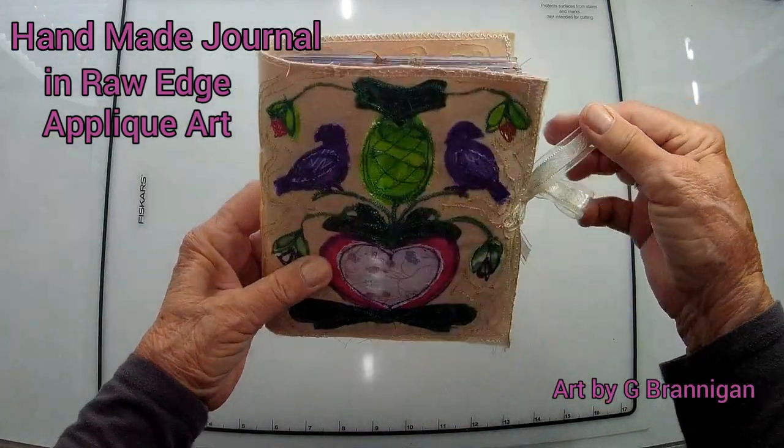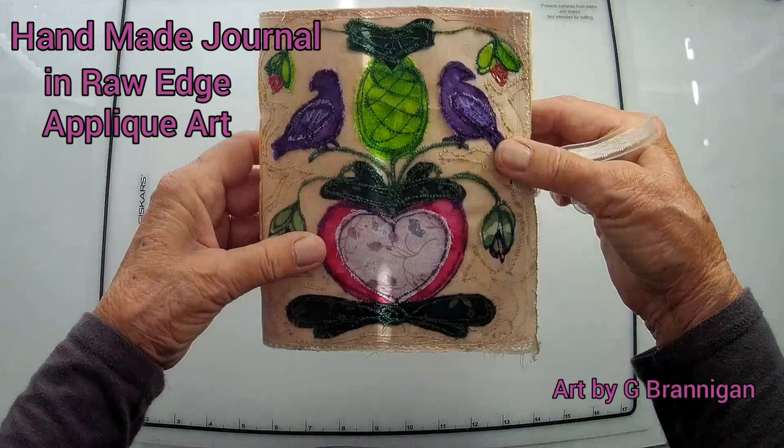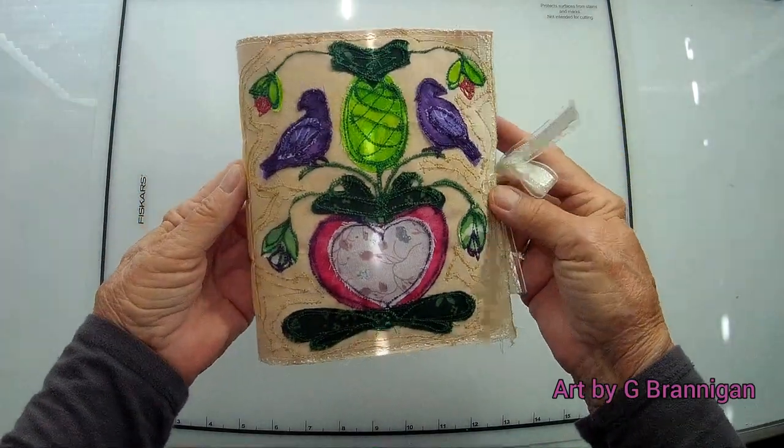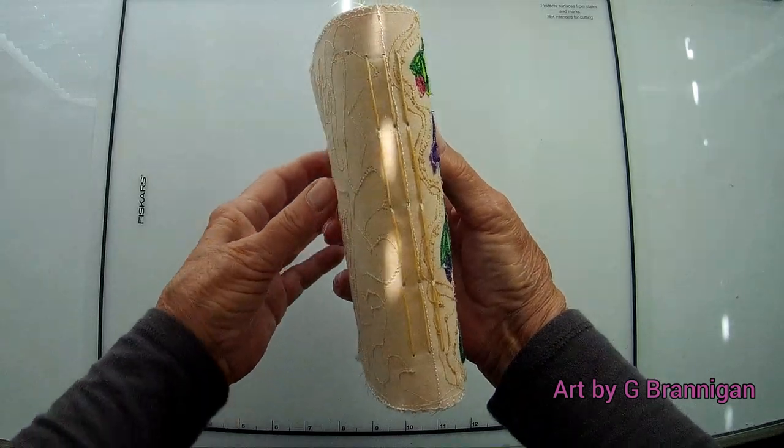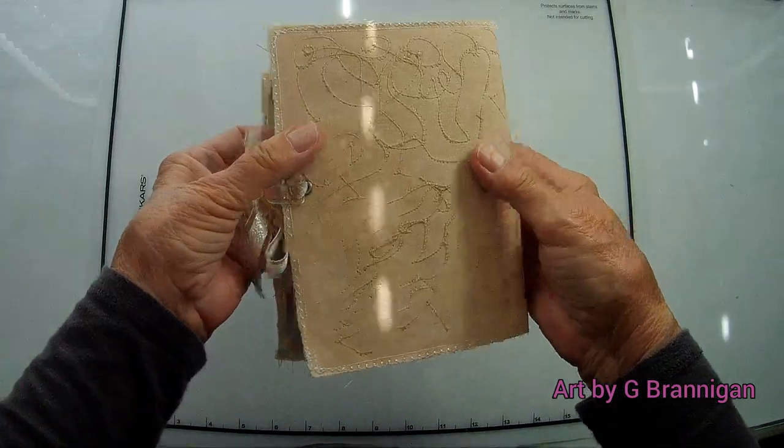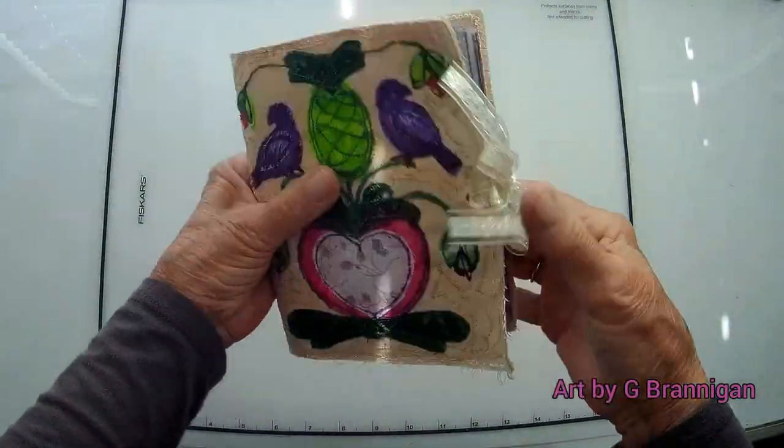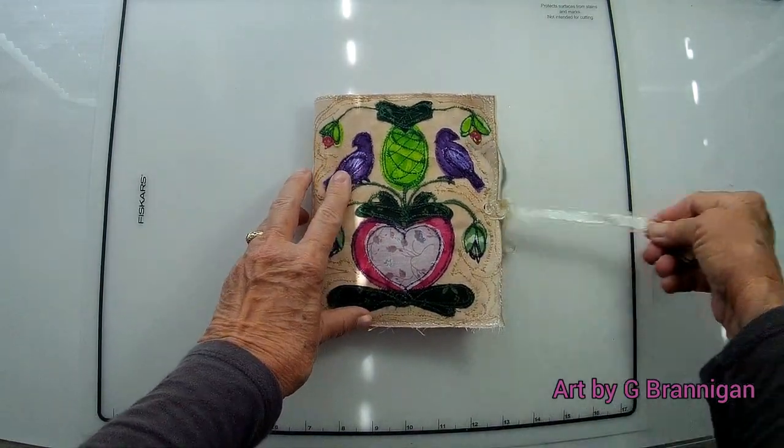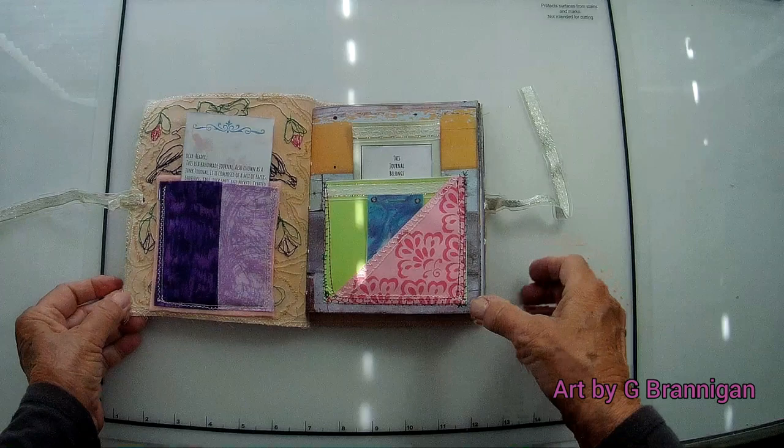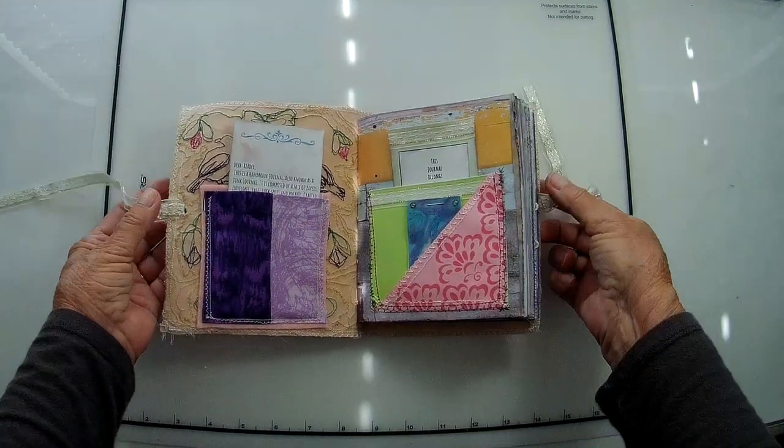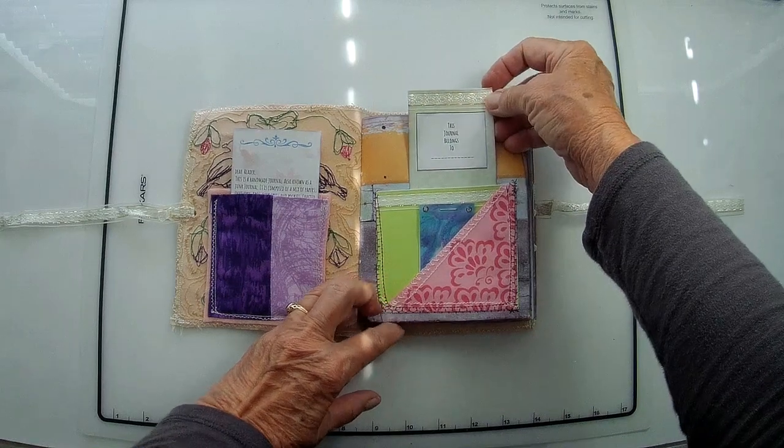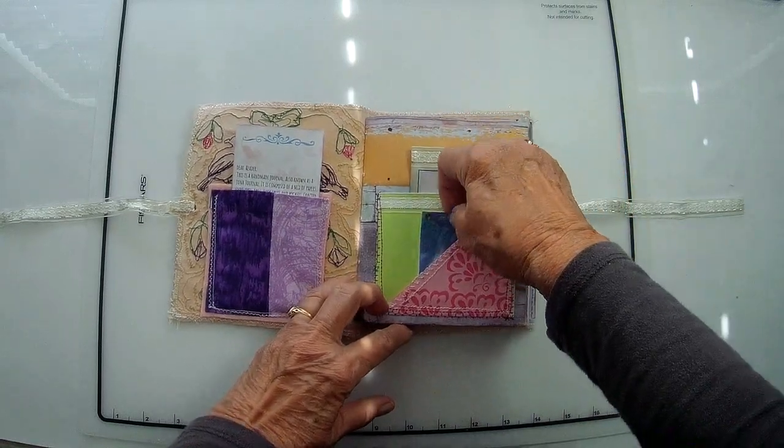Hey peeps, this is G. Branigan showing you what I've been up to lately, and that is I've been making these cloth covered art journals, junk journals, with my own design on it, which is like a folk art, German American art, purple birds with a pineapple and flowers and hearts, and it's got mostly a purple theme.